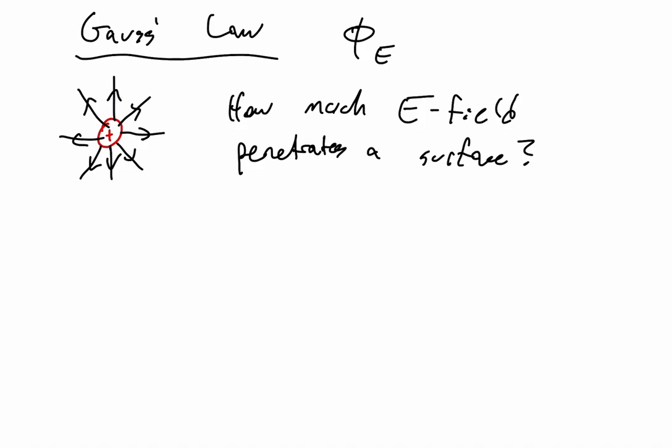Now let's examine another scenario where we put our sphere around our charged particle. All of our electric field lines are pointing out of our closed surface. Because all of our field lines are pointing outward, our net electric flux is going to be positive. If this were a negatively charged particle instead, all of our electric field lines would be pointing inwards and we would have a negative electric flux. But here, our electric flux is greater than zero.